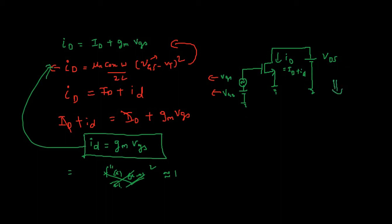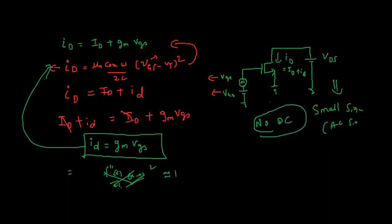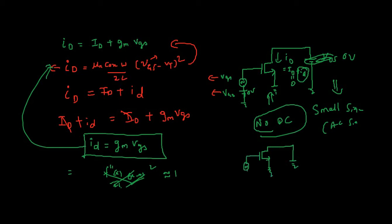Coming to the circuit: for the small signal model, only AC signals are present — no DC. This means VGS becomes short — zero volts. So we have only small vgs as the AC signal input, and ID will be equal to only the small signal component, small id. The DC current becomes zero. So the new MOSFET circuit has: this is ground, and we have only small vgs at the input.